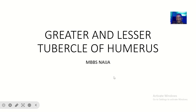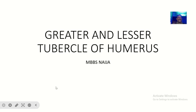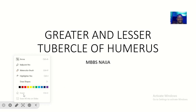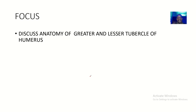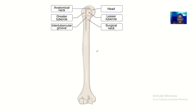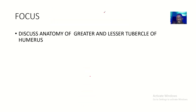Hey guys, I hope you're fine. Today we'll be talking about the greater and lesser tubercles of the humerus. We spoke earlier about the anatomy of the humerus, but now we'll be focusing on just the upper part — specifically the greater tubercle and the lesser tubercle.